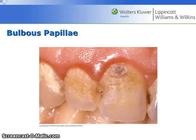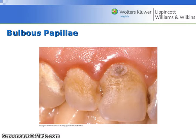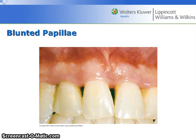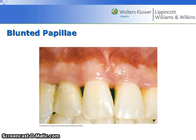Bulbous papillae: in gingivitis, the papillae may be enlarged and appear to bulge out of the interproximal space, as seen in the papilla between the central and lateral incisors in this clinical photograph. See page 228, figure 13.7. The papillae may also be blunted and missing, as seen in the papillae between the central and lateral incisors. See figure 13.8 on page 228.